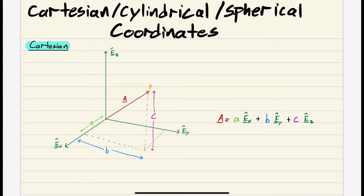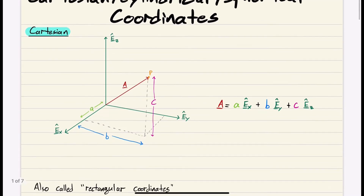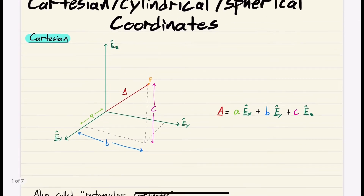Let's talk about Cartesian, cylindrical, and spherical coordinates. We're going to begin with Cartesian. This is the easiest one to understand conceptually out of all of them — it's kind of what we're all used to.